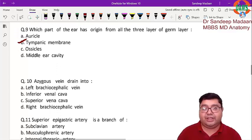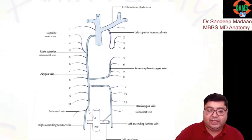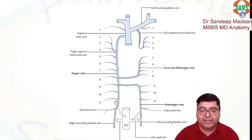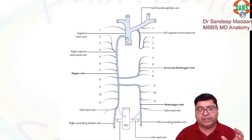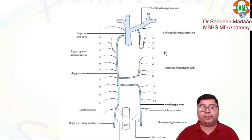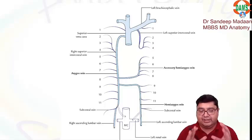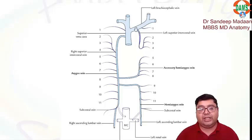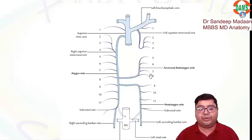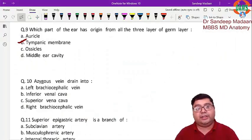The azygous vein is on the right side — as its name suggests, it is without a partner. It drains into the superior vena cava (SVC). The first posterior intercostal vein on both sides drains into the brachiocephalic. On the left side, we have three areas of drainage: brachiocephalic, accessory hemi-azygous, and hemi-azygous. With 12 veins divided by 3, that gives 4 veins each: 1-4, 5-8, and the remaining.